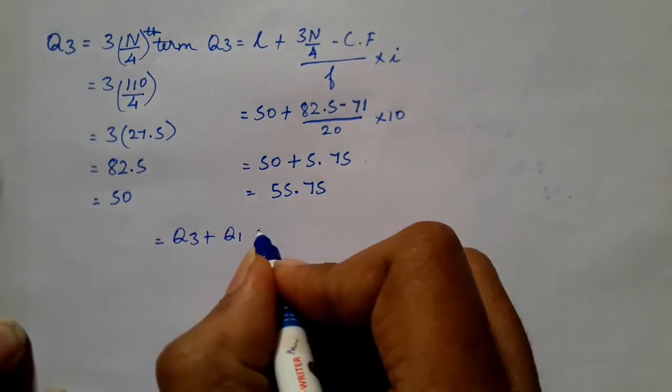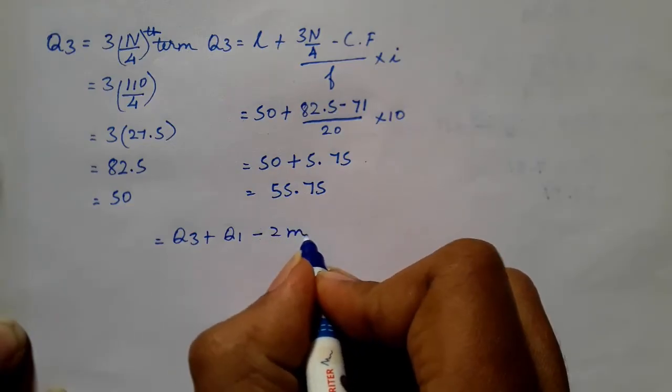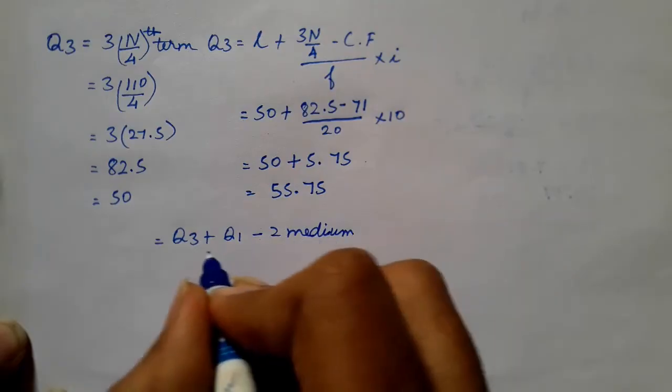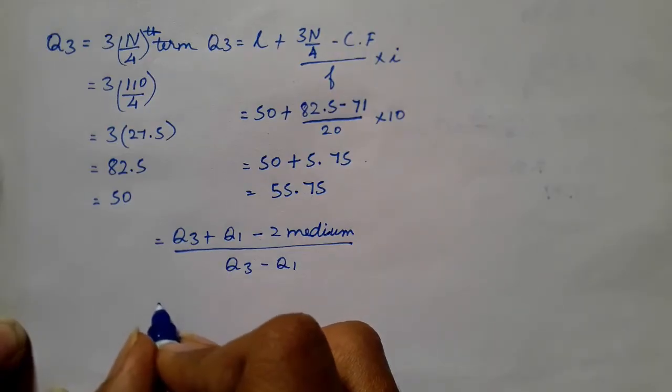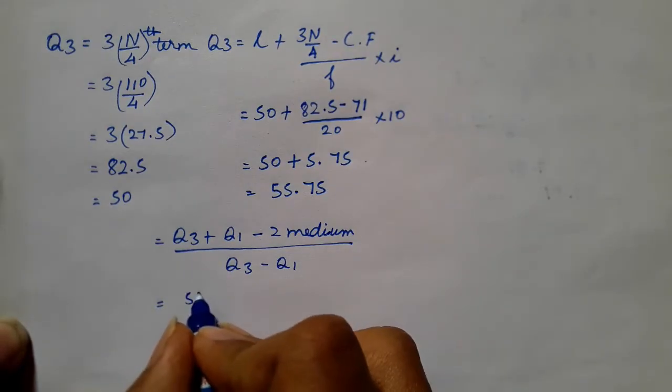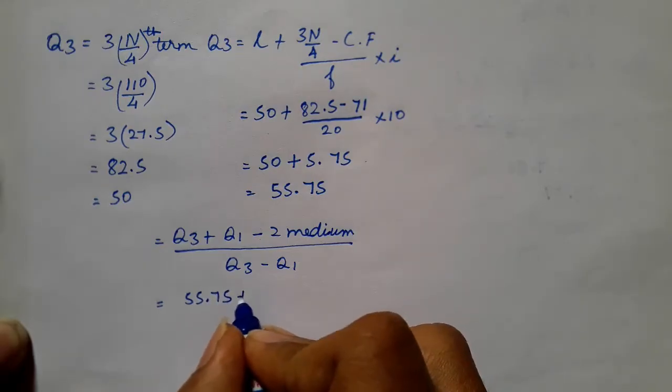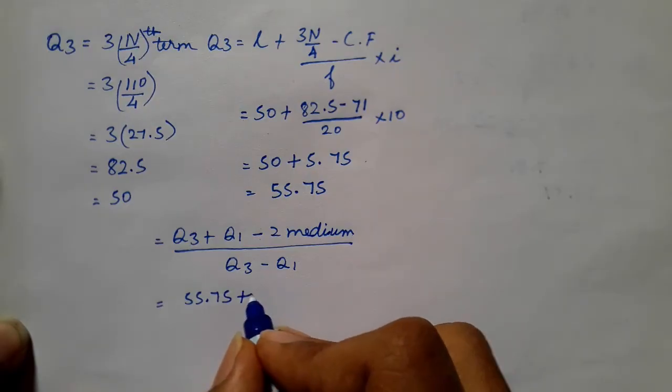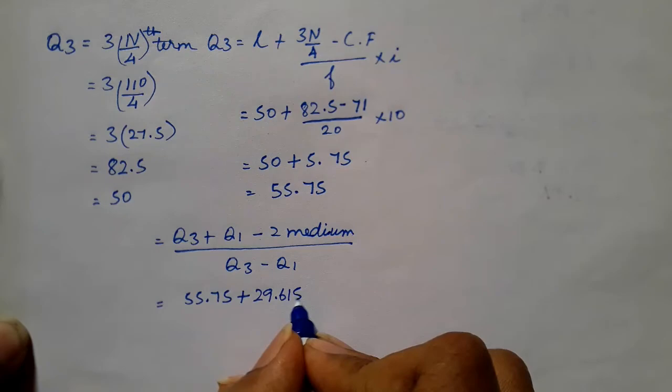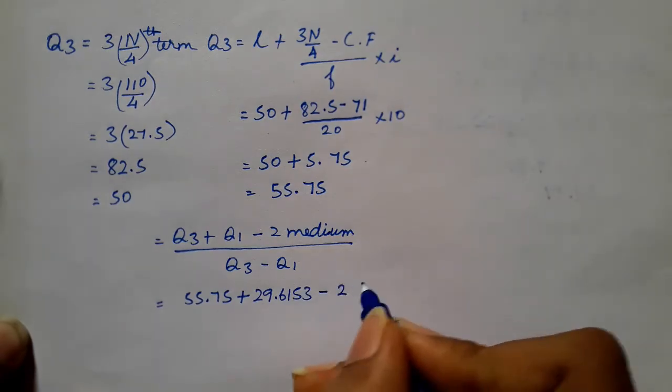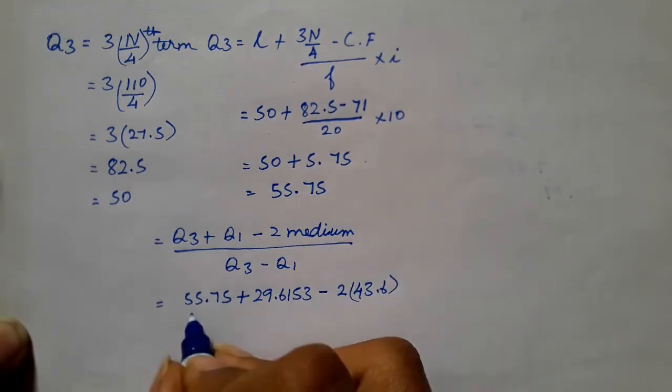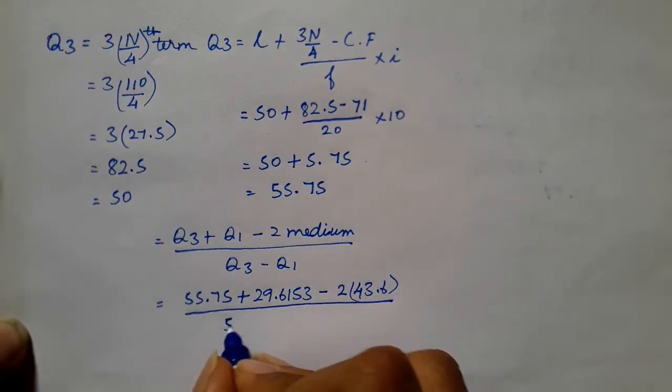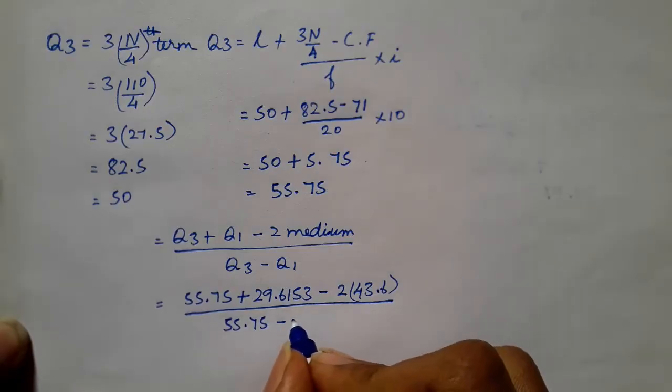We substitute q3 plus q1 minus 2 median divided by q3 minus q1. q3 value 55.75 plus q1, we have the answer 29.6153 minus 2 into median q2 43.6 divided by q3 55.75 minus q1 29.6153.